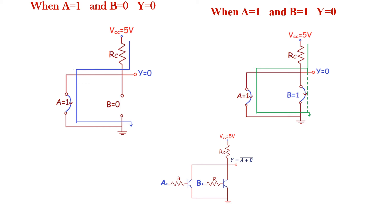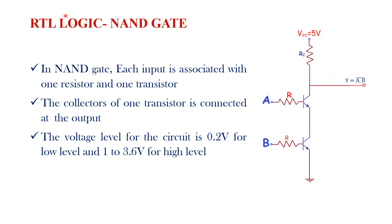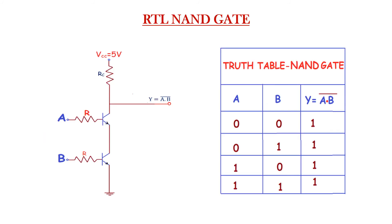That is all about the working of the RTL NOR gate. Next, I am going to explain the RTL NAND gate. In the NAND gate, each transistor is combined with a resistor, and both resistors are connected in series combination with another resistor directly connected to the power supply. Each input is associated with one resistor and one transistor, and the collector of one of the transistors is connected to the output. The logical equation is Y equals A·B, the whole bar.